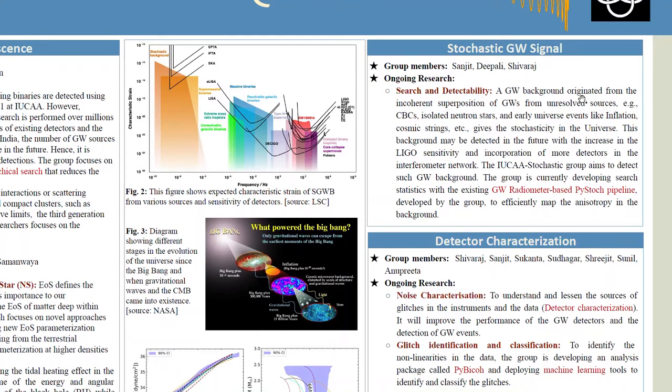Now let us discuss another broad area in which the research is happening at IUCAA, it is related to stochastic gravitational wave signals. So what is it? It may happen that there are some unresolved sources of CBC or there may be events in the early universe like inflation, cosmic strings, or some phase transitions which may produce gravitational signals and gravitational signals from all these sources may superpose and reach us. How can we identify these signals?